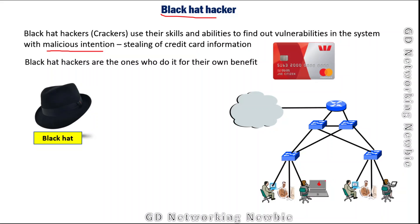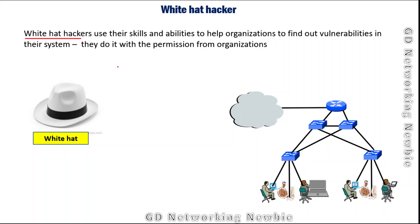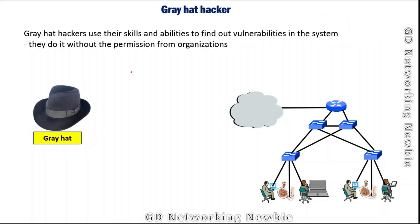White hat hackers use their skills and knowledge to help organizations find vulnerabilities in their systems. An organization may have application programs, systems, and infrastructure that are always at risk of black hat attacks. To avoid that situation, they can hire white hat hackers, who help find those vulnerabilities before any black hat hacker can exploit them. They do this with the permission of the organization or individual. This process is also known as ethical hacking.